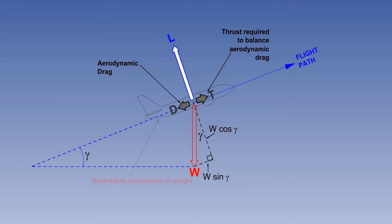This backwards component of weight, when added to the drag, creates a requirement for more thrust to re-establish equilibrium for steady flight.